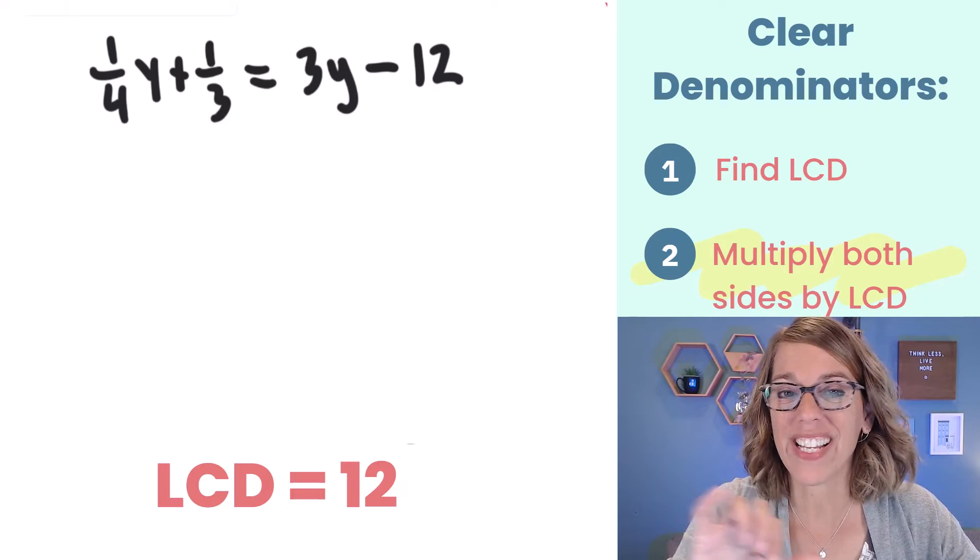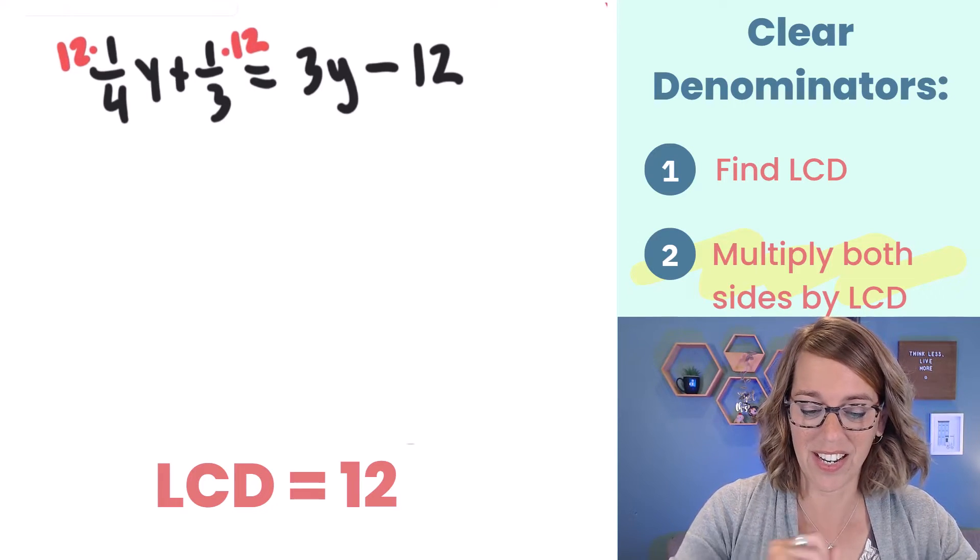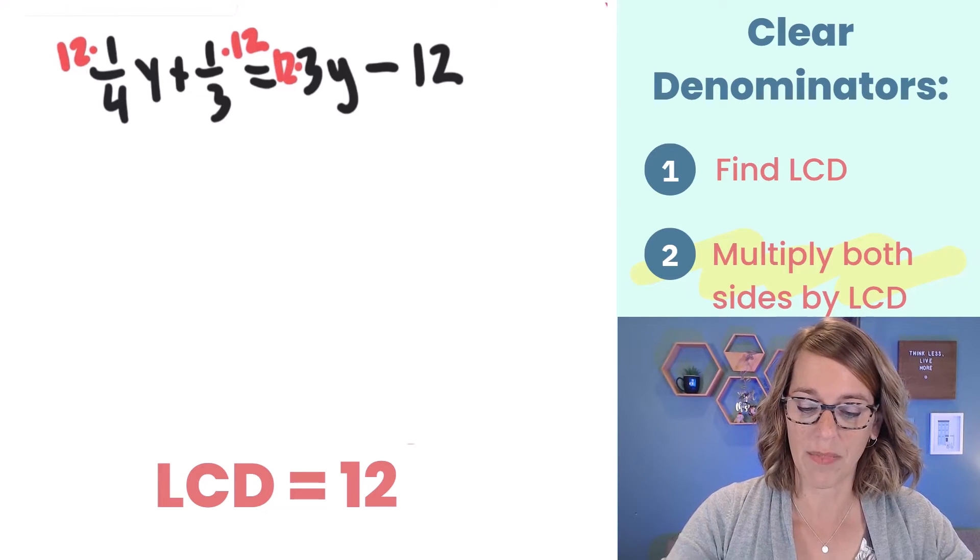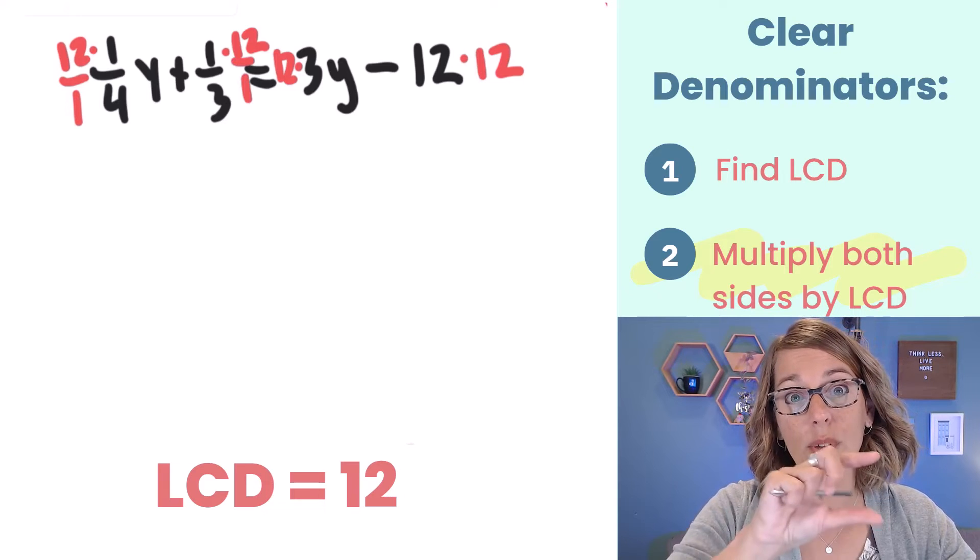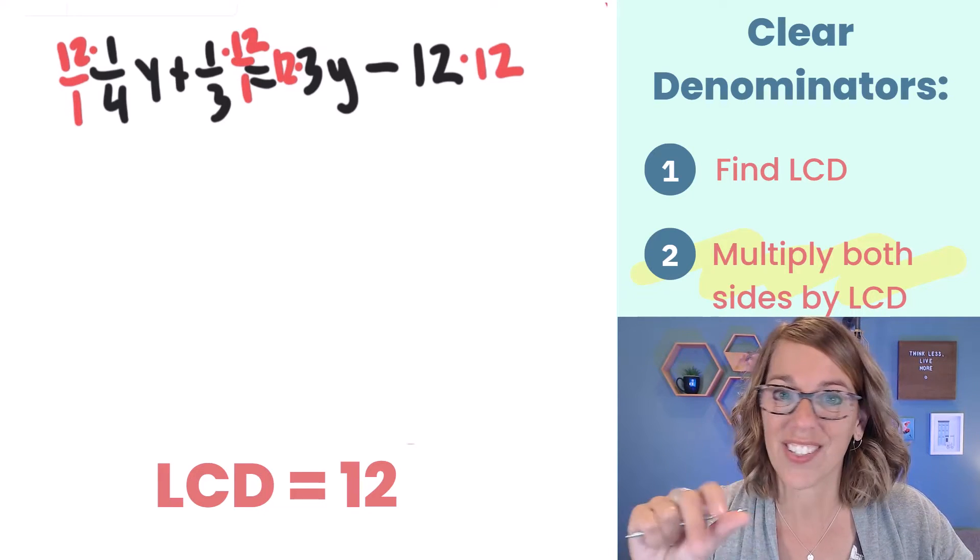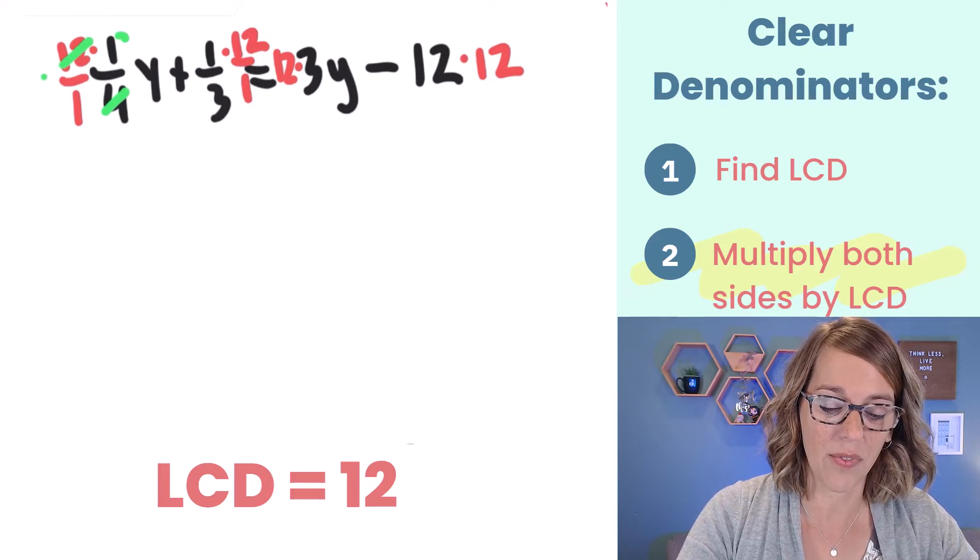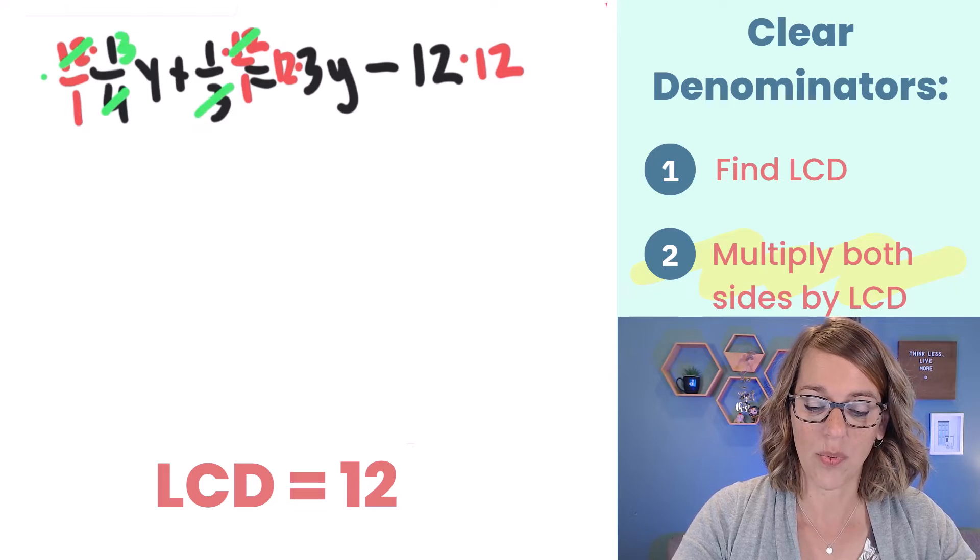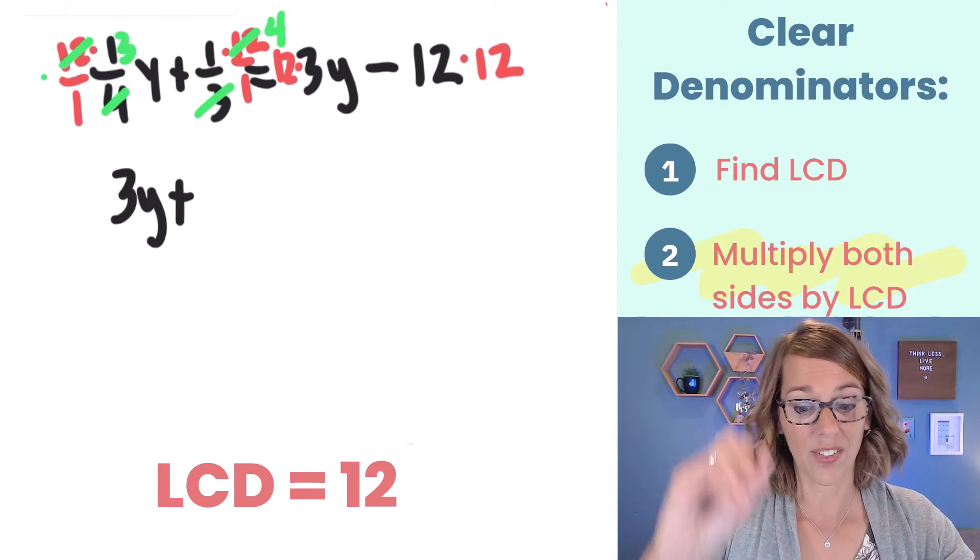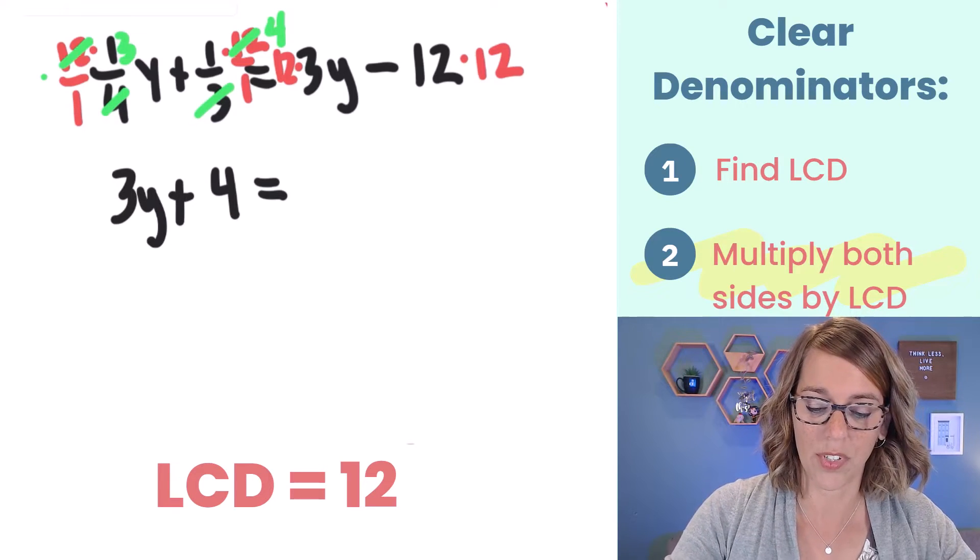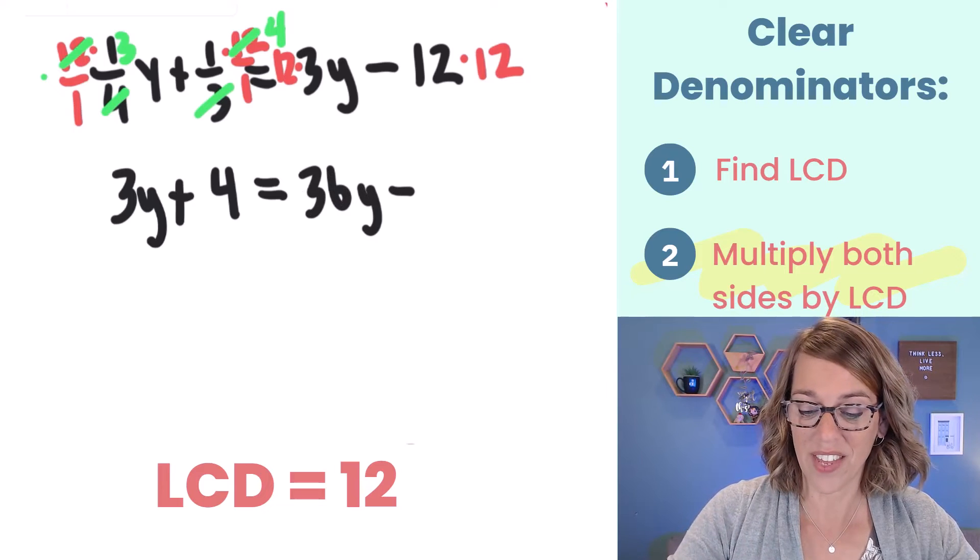Now we're ready to multiply every single term on either side of the equation by our 12. So I've got 12 times that first term and then 12 times the 1/3 and then I've got 12 times the 3y and then on the end 12 times 12. You can think of those as fractions when you're multiplying so that you remember how to cancel. 4 goes into 12 and that's going to leave me with a 3 in front of the y. 3 goes into 12 and I get a 4. So I have 3y plus 4 is equal to on the right hand side 12 times 3 is 36y minus 12 times 12 that is 144.